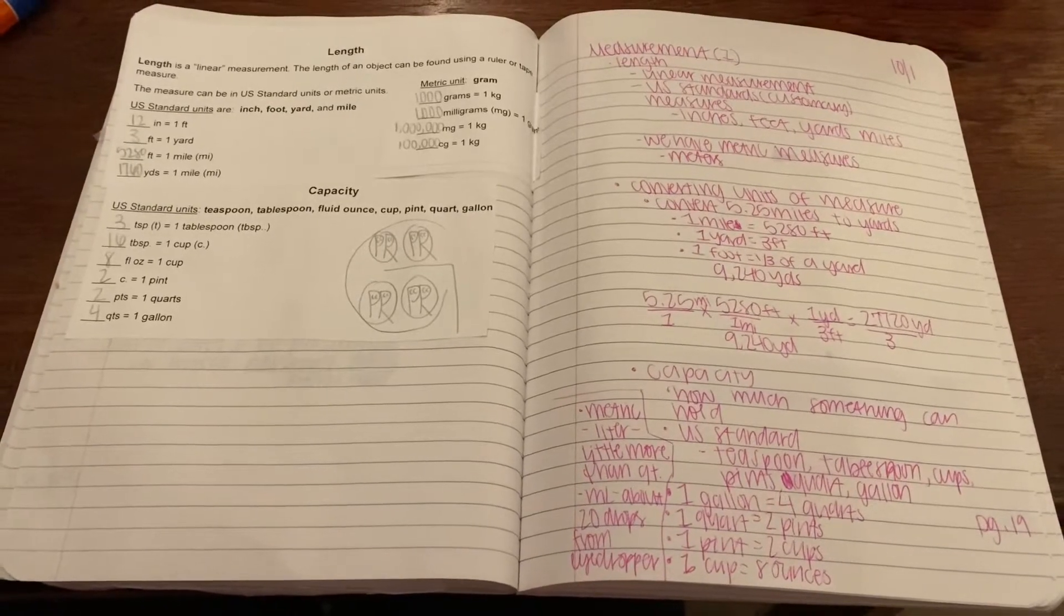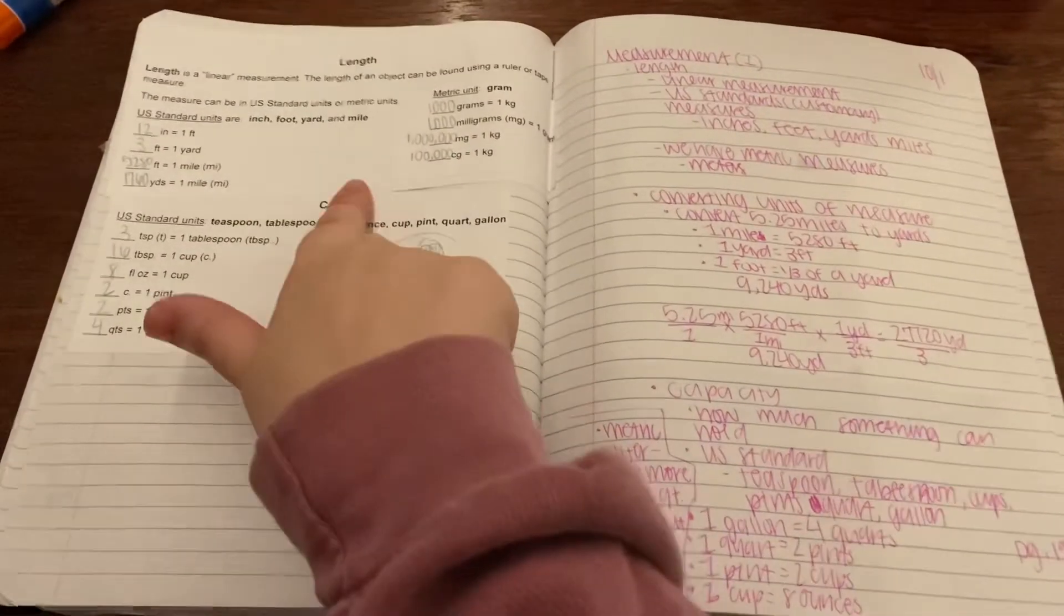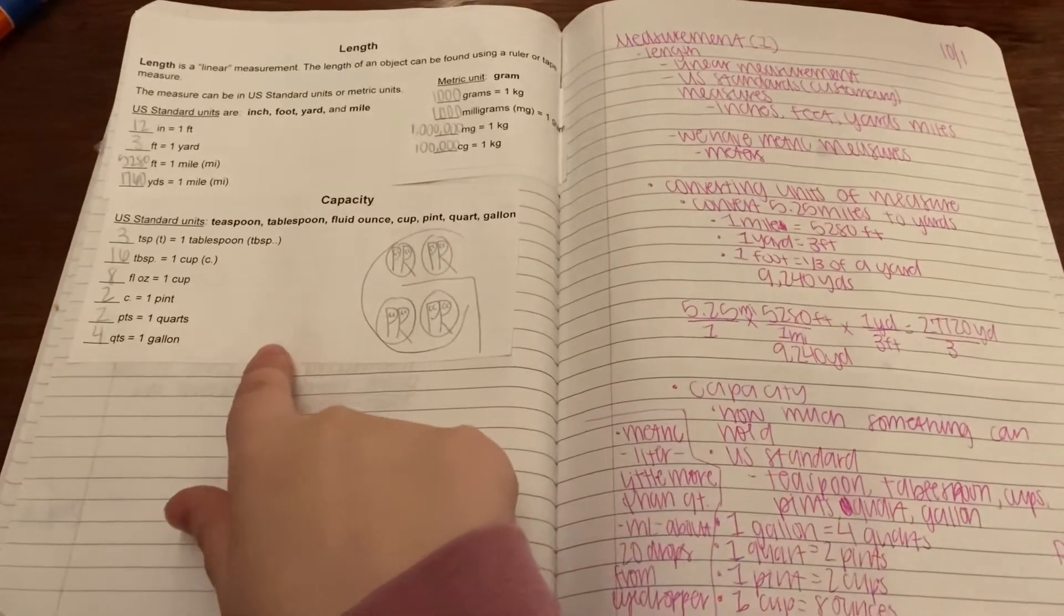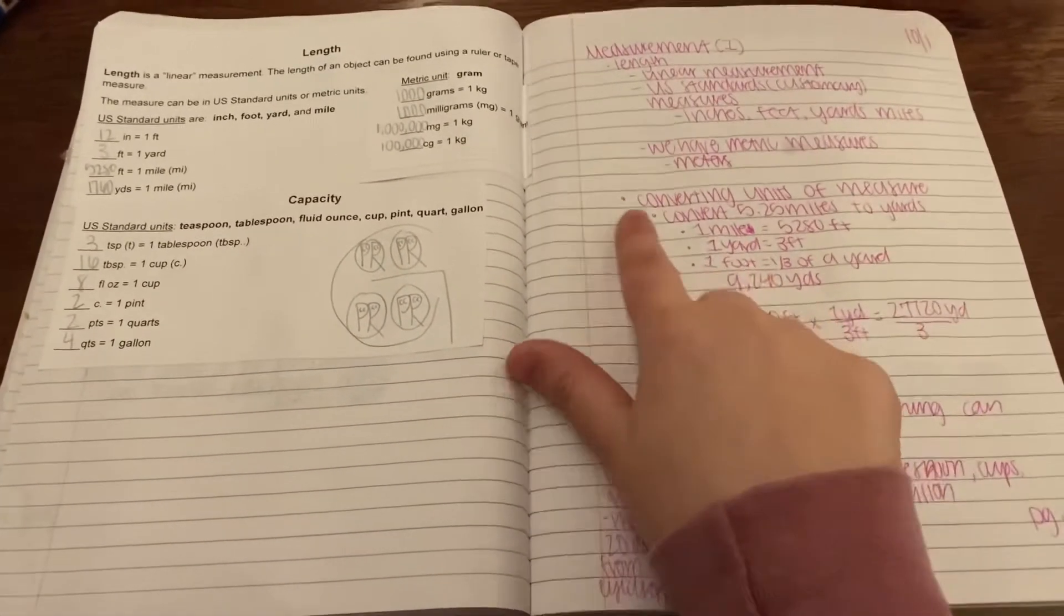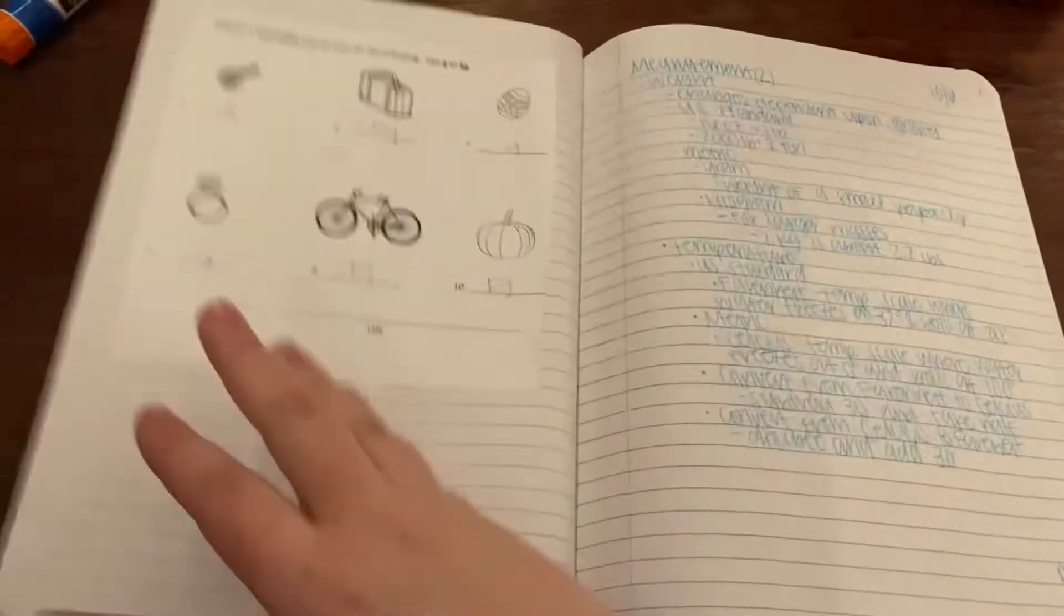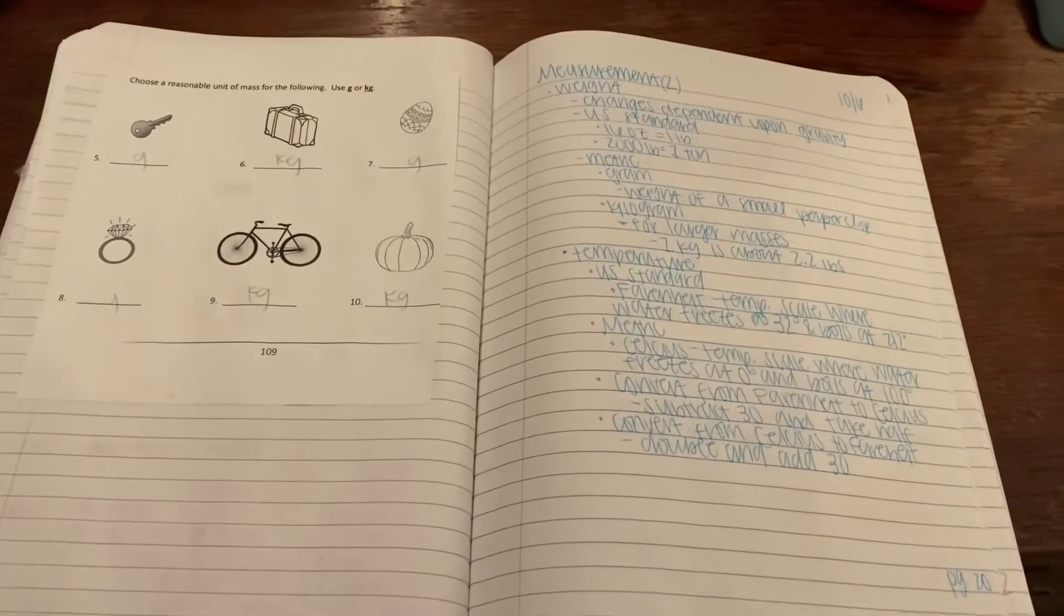Okay, so first we have measurement, and then I have the page from the book with the length and everything, and I have capacity and everything written down, and then converting.